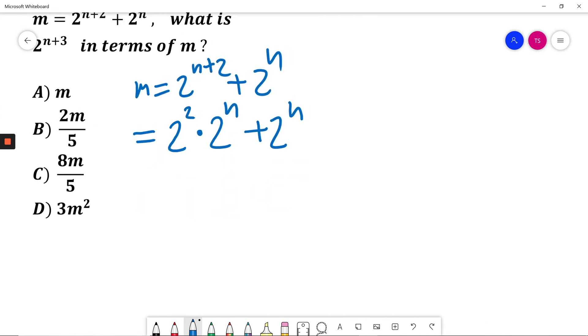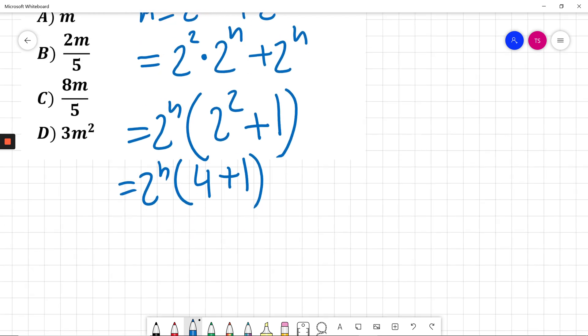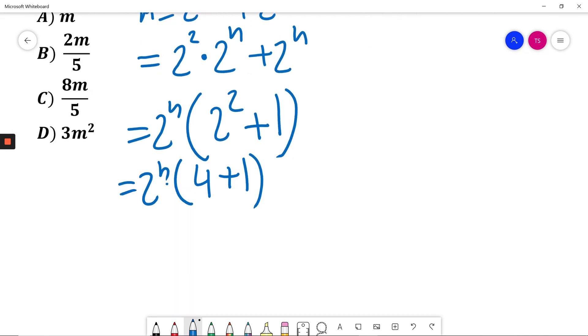Next step, I will put 2 to the power of n in front of the bracket. 2 squared plus 1. So this will be 2 to the power of n. 2 squared is 4 plus 1. 4 plus 1 is 5. I'll put it in front of the bracket: 5 times 2 to the power of n.